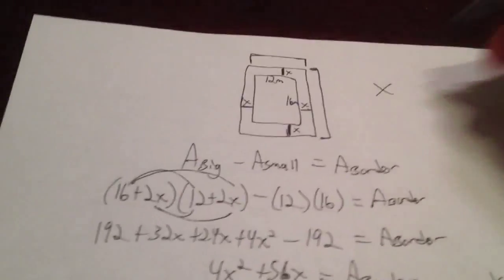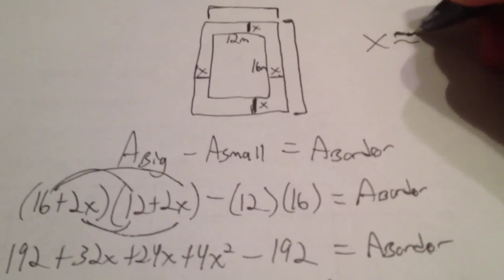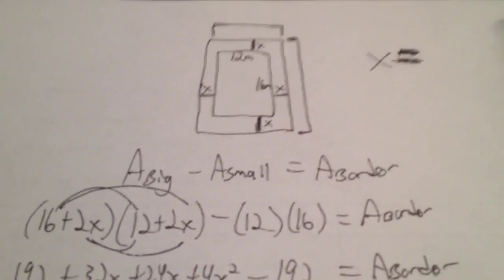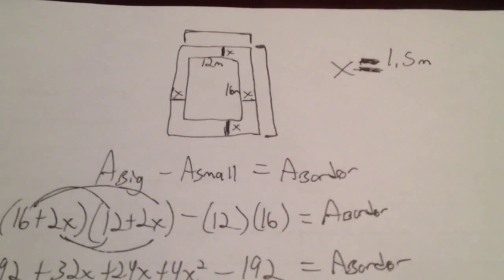So my answers are positive 1.5 and negative 15.5 when I do both the plus or minus version of this. So which one is going to be the answer? It's going to be 1.5. So my answer for my width here is going to be that the width needs to be equal to, sorry I had to put an approximate sign, but it's actually an exact answer, 1.5 meters in the width there.